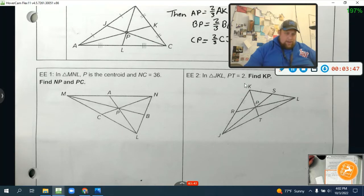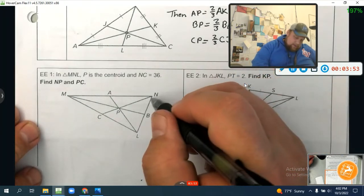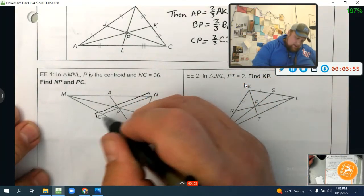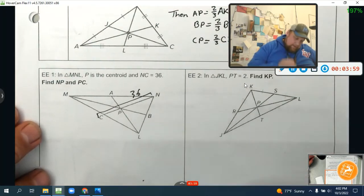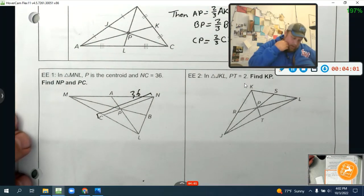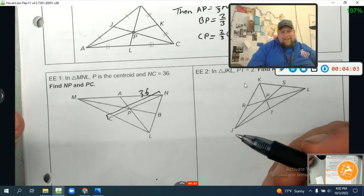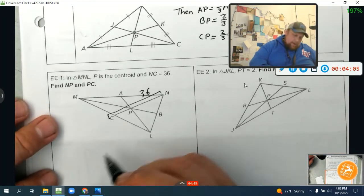So triangle MNL, P is the centroid, and NC is 36. So NC, that whole distance is 36. Find NP and PC, okay? So honestly, guys, I do this a little differently. Kind of the way they're wanting to do it to say, hey, NP equals two-thirds times 36.